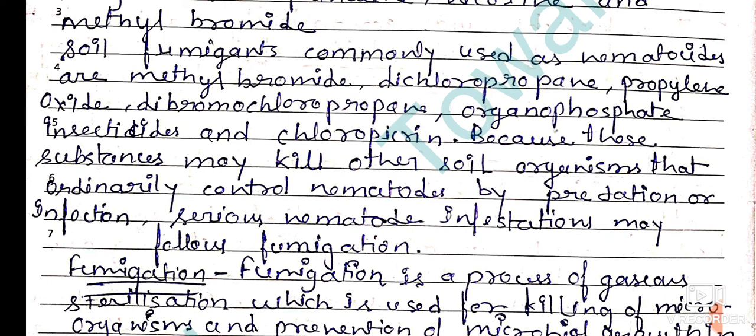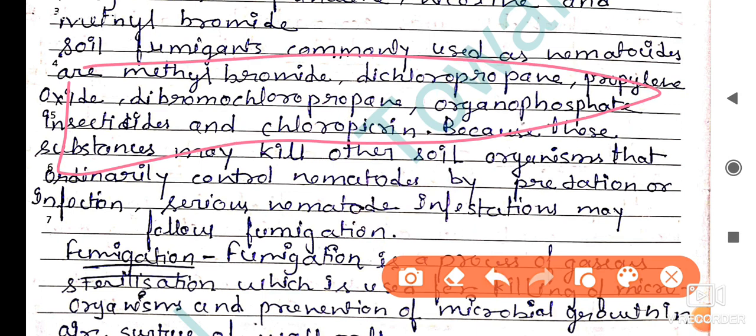Because these substances may kill other soil organisms that ordinarily control nematodes by predation or infection, serious nematode infestations may follow fumigation. To summarize, soil fumigants used as nematocides are methyl bromide, dichloropropane, propylene oxide, dibromochloropropane, organophosphate insecticides, and chloropicrin.